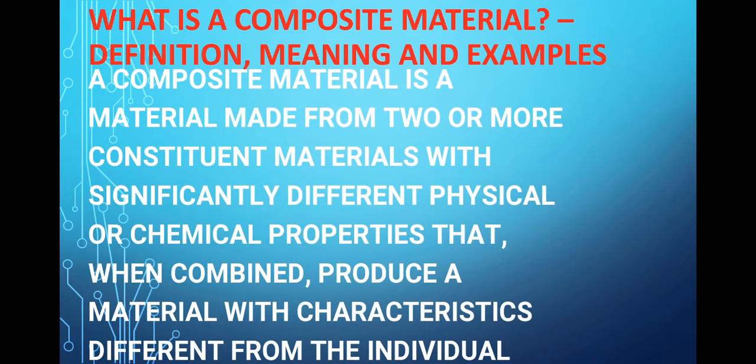Composite materials are those materials made by combining two or more different materials having different physical and chemical properties, such that when combined, the resulting material has properties different from the individual components. Composite materials wo material hote hain jo 2 ya 2 se jyada materials ko mila ke banaye jate hain, jinki physical aur chemical properties different hoti hain.